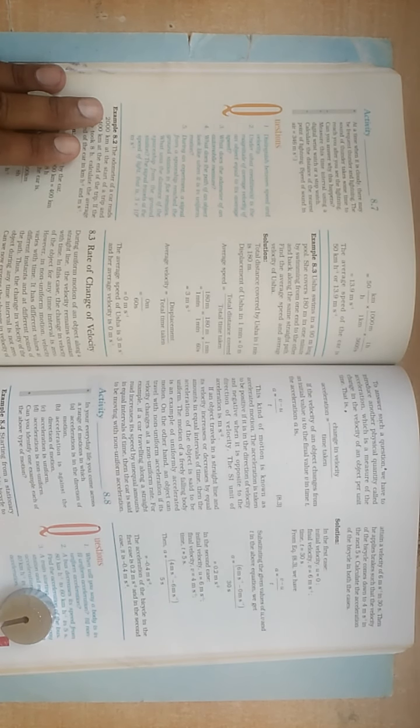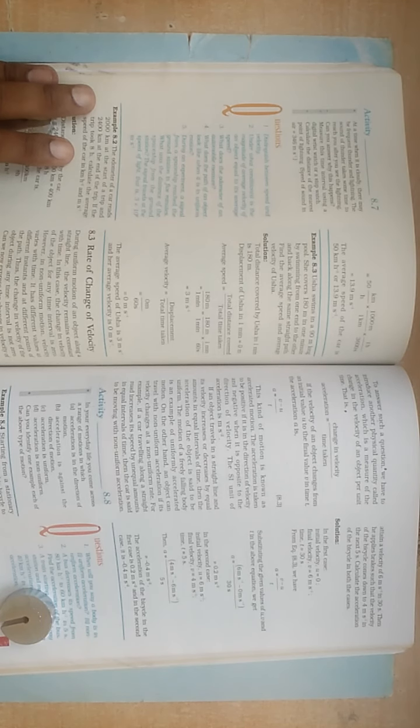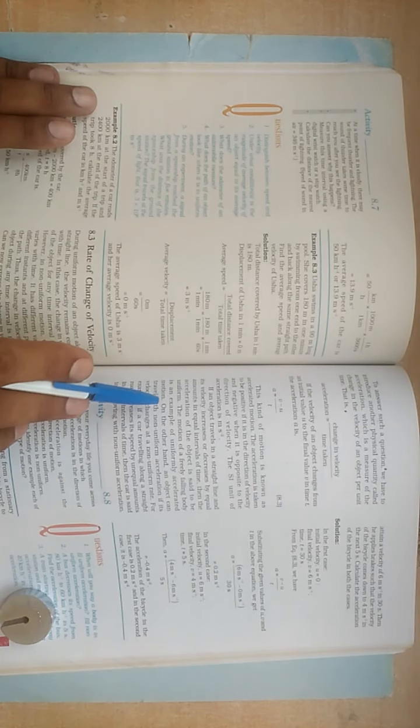...then the acceleration of the object is said to be uniform. We say uniform acceleration if equal intervals of time have equal amount of velocity increase or decrease. You can underline this one.